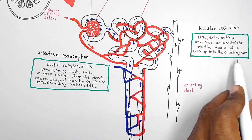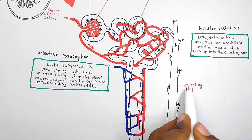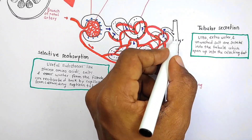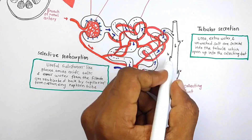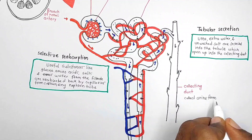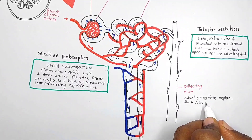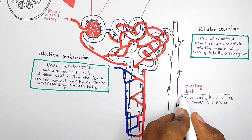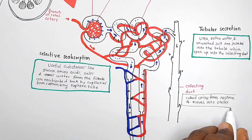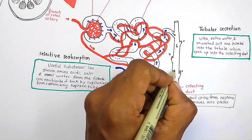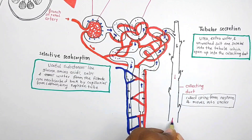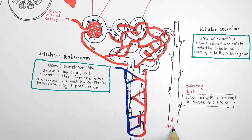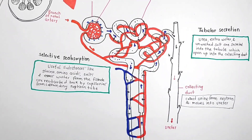So what is the function of the collecting duct? The collecting duct collects urine from the nephron and moves it into the ureter. The collecting duct transfers the urine into the ureter.